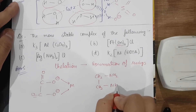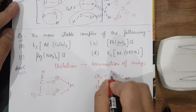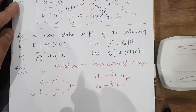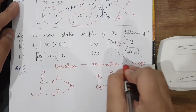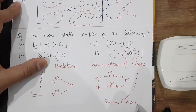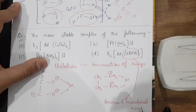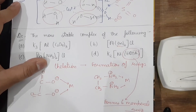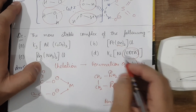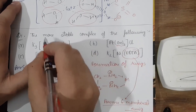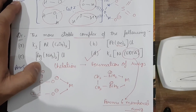In the third option there is no chelation. In the last option, EDTA forms six-membered rings, is hexadentate, and coordinates from six sides. Because EDTA has the most chelation and all electron-donating groups, it forms the most stable complex. Therefore the most stable complex is formed by option D.